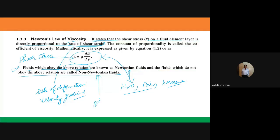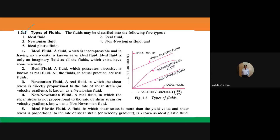Examples of non-Newtonian fluids include blood and toothpaste. There are also various types of fluids: an ideal fluid has constant density and zero viscosity (imaginary only). A real fluid possesses viscosity — all actual fluids are real fluids, and they can be further classified as Newtonian, non-Newtonian, or ideal plastic fluids.